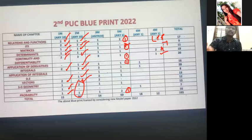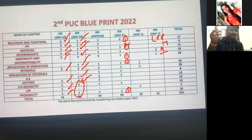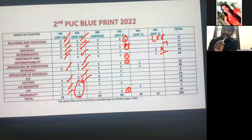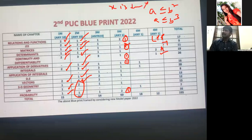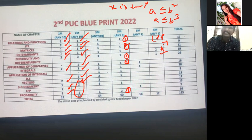For three-mark questions, in Relations and Functions: A ≤ B², A ≤ B³, or x is divisible by y — verify reflexive, symmetric, and transitive properties. Any one of those three questions will come. It is an easy question. For ITF three-mark questions: solve tan⁻¹(2x) + tan⁻¹(3x) — find the value of x type questions they will give for 3 marks.